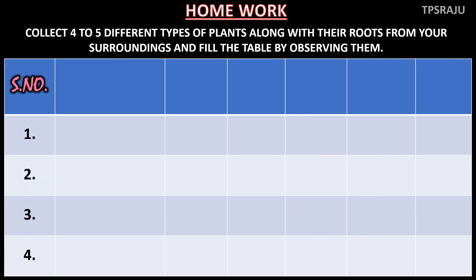Are you ready to do the homework? Collect 4 to 5 different types of plants along with their roots from your surroundings and fill the table by observing them, as given in your science textbook.